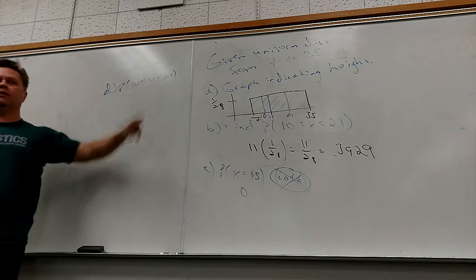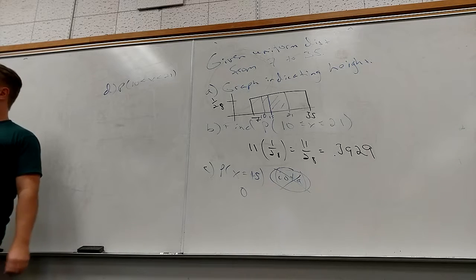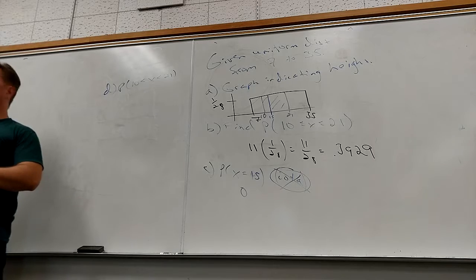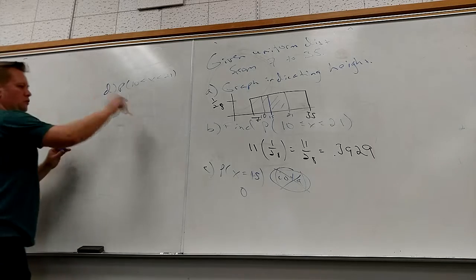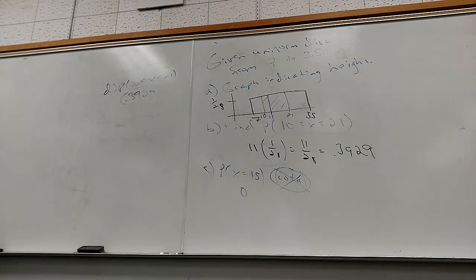Not including the endpoints doesn't change the area at all. Or it changes it in an infinite decimal place. Whatever way you look at it, it basically translates to, it ain't different. So this would still be 0.3929. That's going to be true for any continuous distribution.